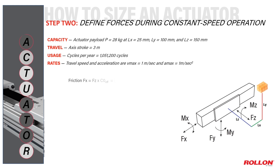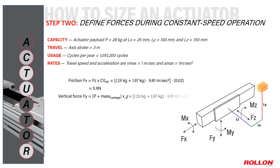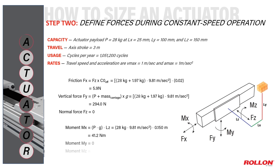Fx is the payload plus the weight of the carriage multiplied by the coefficient of friction from the actuator supplier. There is no additional lateral force on the carriage, so Fz is zero. The force in the Y direction is the acceleration due to gravity multiplied by the sum of the payload and carriage masses. The values for moments around the X and Z axis depend on the amount by which the payload center of gravity is cantilevered off the actuator carriage.